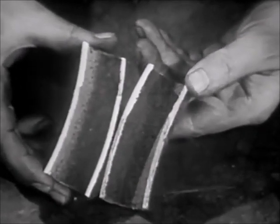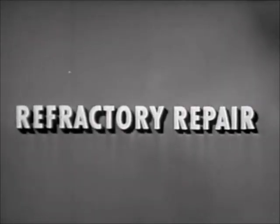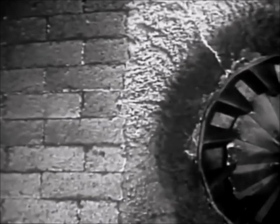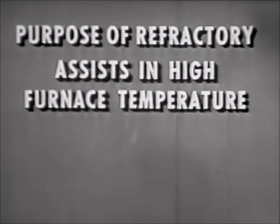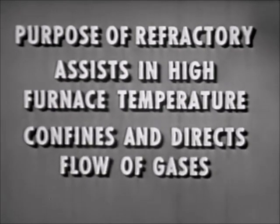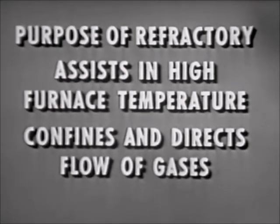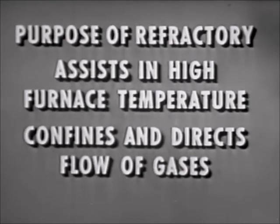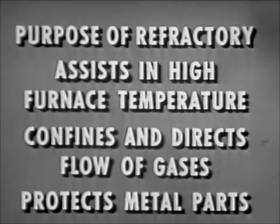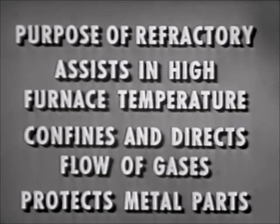This completes the introduction to renewal of boiler tubes. Equally important with the condition of boiler tubes is that of the furnace refractory lining. The surface material used to line a boiler furnace is called refractory. This assists in maintaining a high furnace temperature and thus accelerates the rate of combustion. It confines and directs the flow of gases of combustion through the generating tube banks. Also, refractory protects metal parts of the furnace, such as casings, drums, and headers, from radiant heat and from being impinged by flame and hot gases.